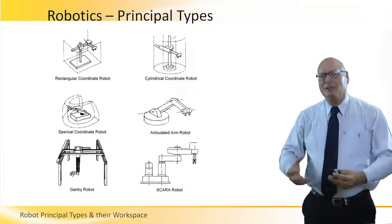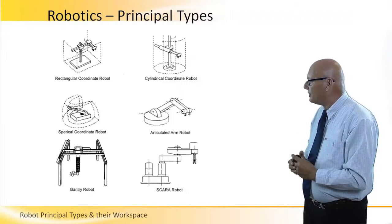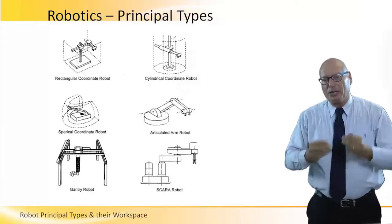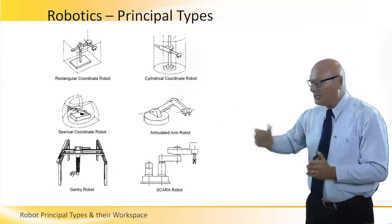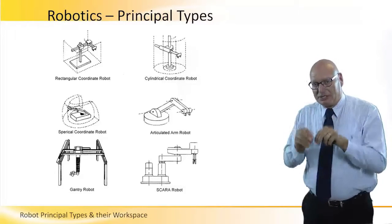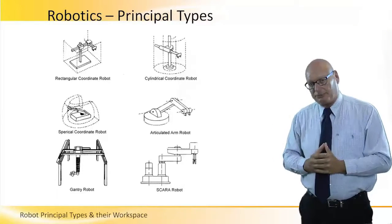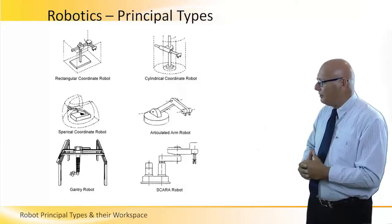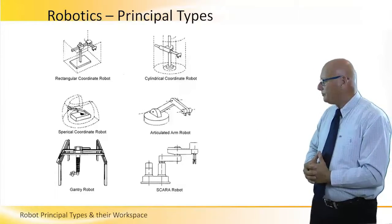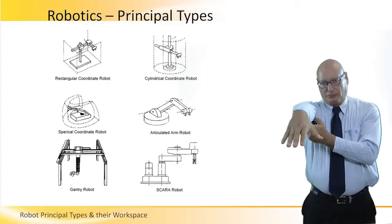Now we touch on the principal types of robots. There are six principal types. In the top left corner we see a rectangular coordinate robot — it uses X, Y, Z coordinates at 90 degrees to one another, and the working space is a cubical space. For this stage of the seminar, let's assume that the working space is equal and identical to the working envelope.